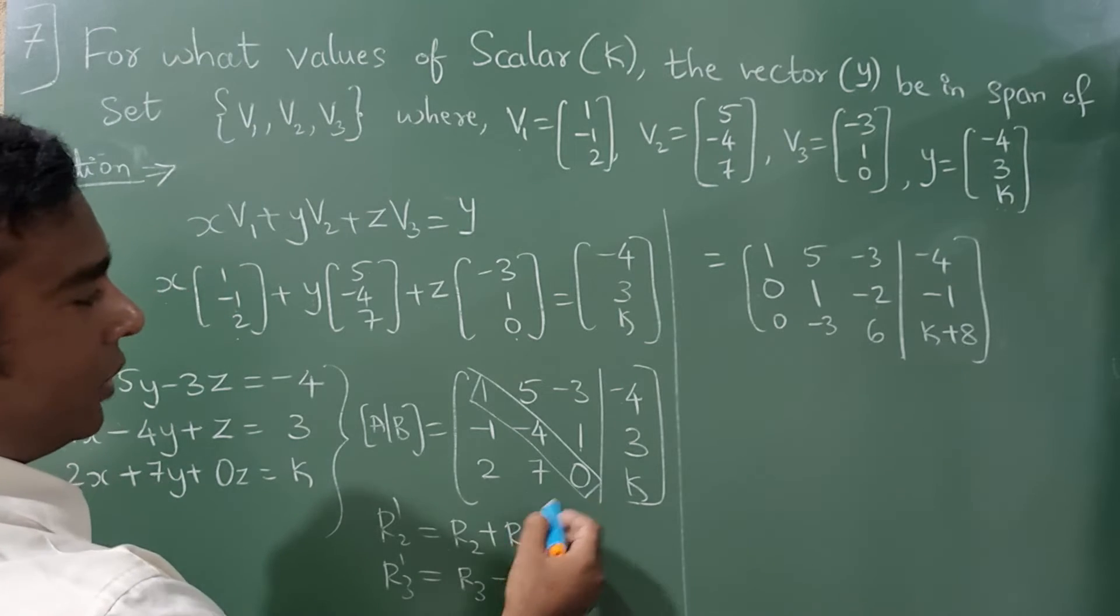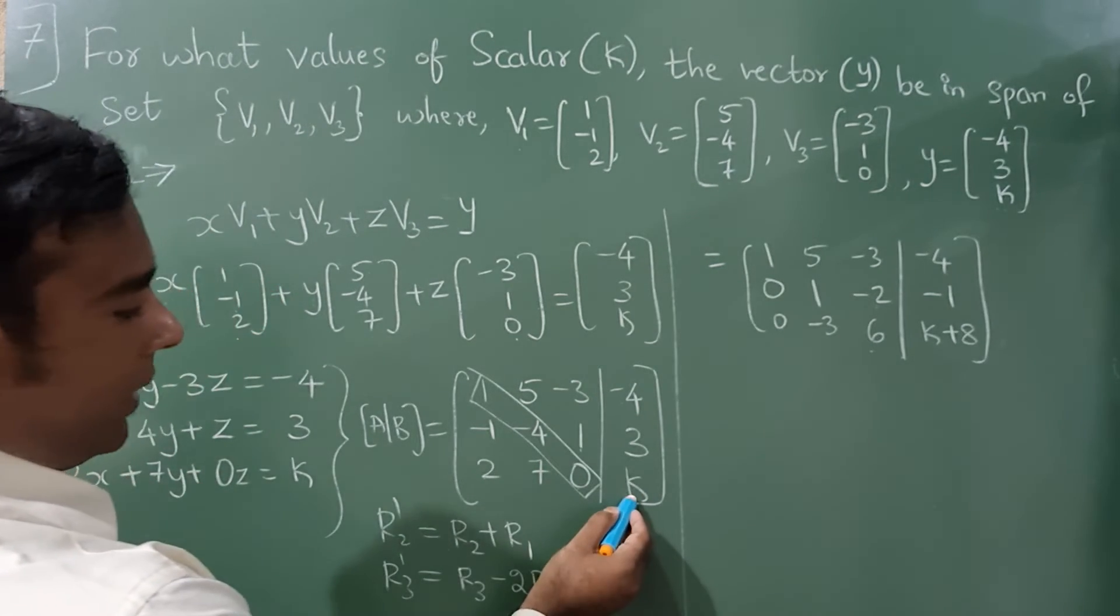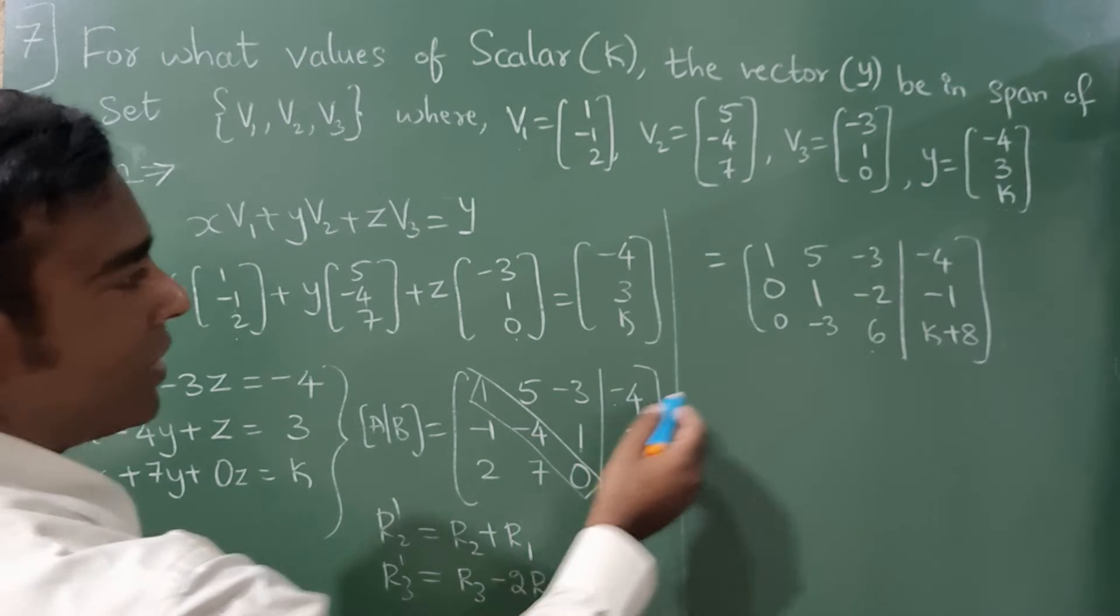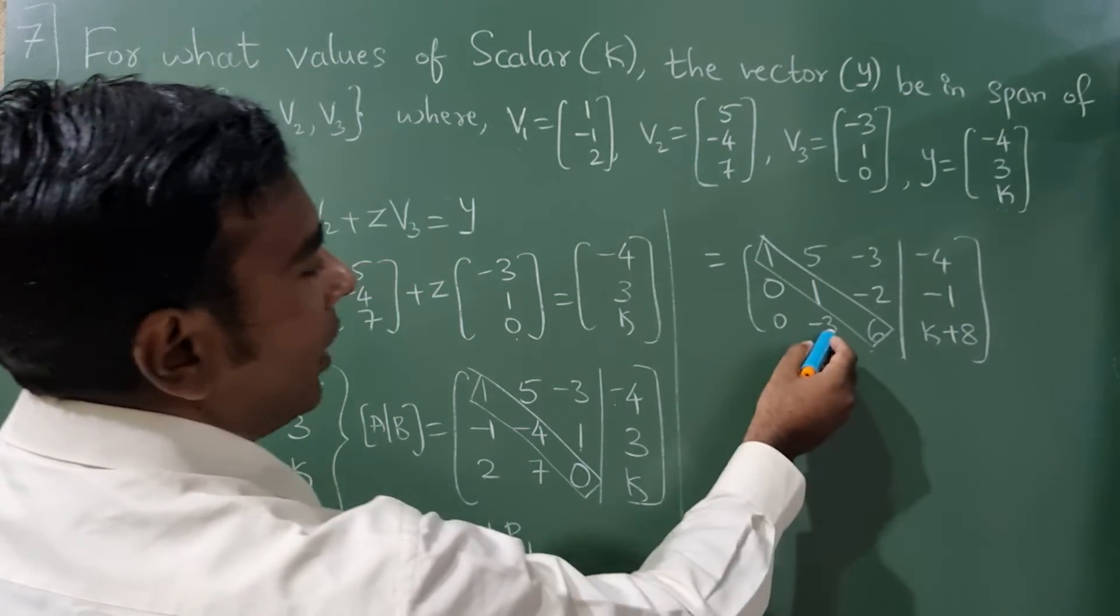Fine. Now here 2 minus 2 will become 0. 7 and 5*2 is 10, so it is minus 3, 0, and 2*3 is 6. Now here k in R3, minus into minus is plus 4*2 is 8, so it is k plus 8. This is your diagonal element.